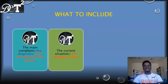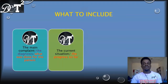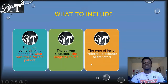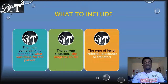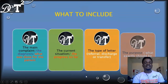You should add the chief complaint or the diagnosis in your introduction — the reason why this patient needs a referral. Another thing to include is the current situation or the progress of the patient so far: is the condition getting worse, is it getting better, has the patient made remarkable progress, or is the condition deteriorating? Also, try to make the type of letter you are writing very obvious — whether it's a referral, transfer, or discharge letter.